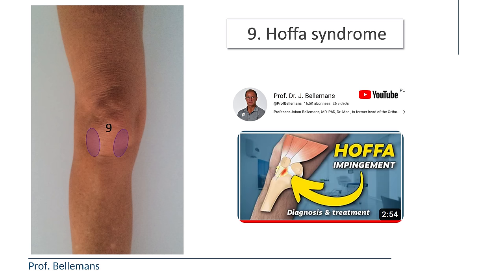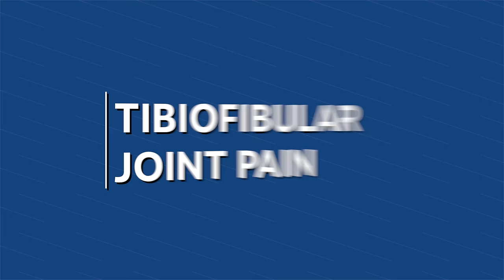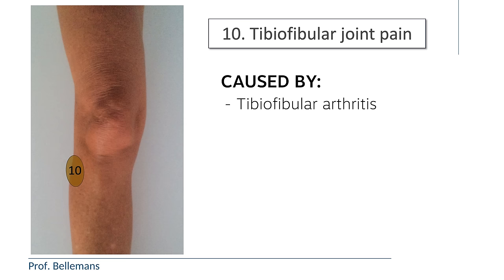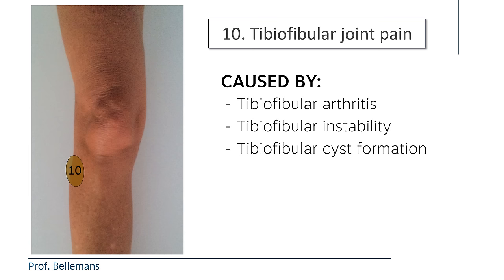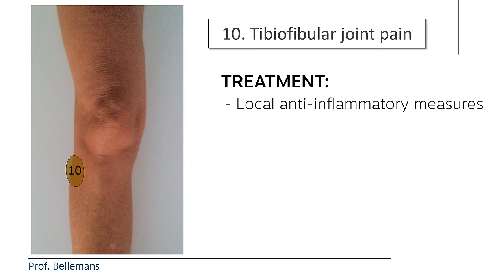10. Tibiofibular joint pain is located low on the outer or lateral side of the knee. It can be caused by several conditions such as tibiofibular arthritis, tibiofibular instability, or tibiofibular cyst formation. An MRI is usually needed for the correct diagnosis. The treatment may consist of local anti-inflammatory measures, local injection therapy, tibiofibular bracing, or sometimes also surgery.